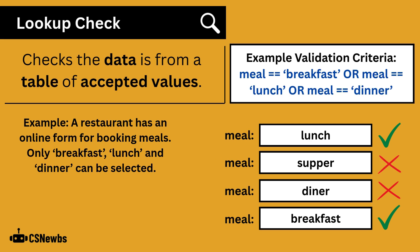A look-up check, sometimes called a table check, checks that data is from a table of accepted values. In this example, a restaurant only allows breakfast, lunch, and dinner to be selected. So lunch and breakfast — the top and bottom values — are accepted, but supper and diner would not be accepted because they are not within the table of accepted values.